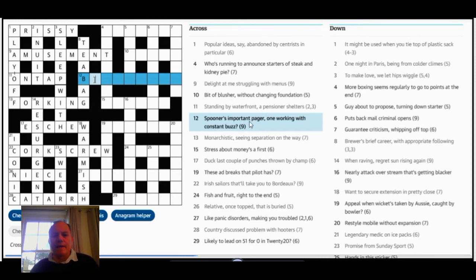It's a grid shape I have a feeling you wouldn't see in The Times for about that reason. If you do solve half a puzzle you've normally got more help into the second half and that might not always be true but it's a feeling I have. 12 across, Spooner's important pager one working with constant buzz now. 99% of the time when you see Spooner in a crossword clue you know that the words following are going to be a bit of wordplay but you can swap the initial letters around as the Reverend Spooner is supposed to have always done and then the rest of the clue will be the real definition.